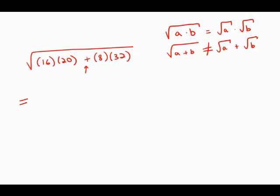One thing we can do is factor out something from both terms. For example, if I factor out a 16, that leaves 20 in the first term. Then if I factor out a 16 from the 32, that leaves two, so I'm left with eight times two in the second term.